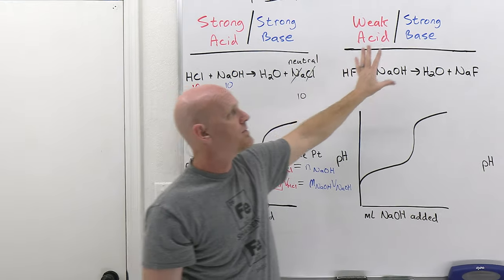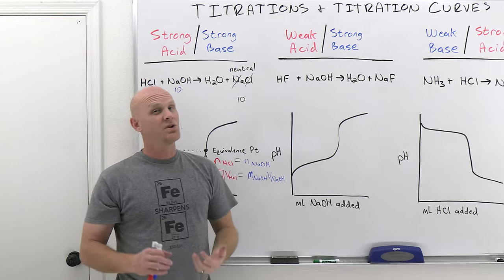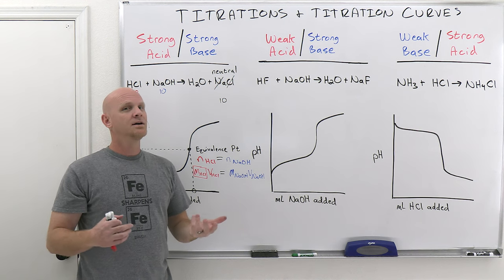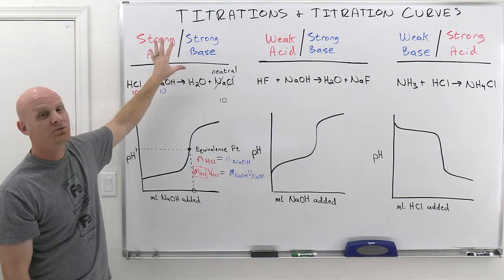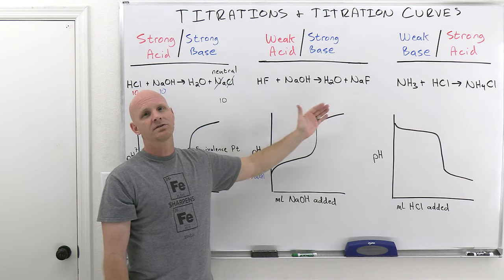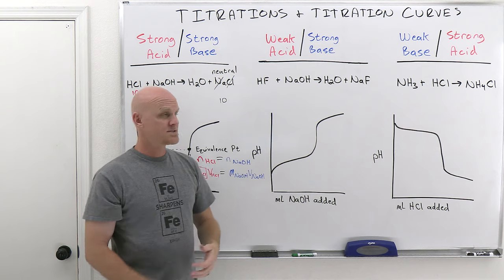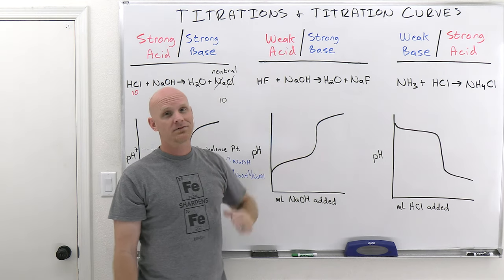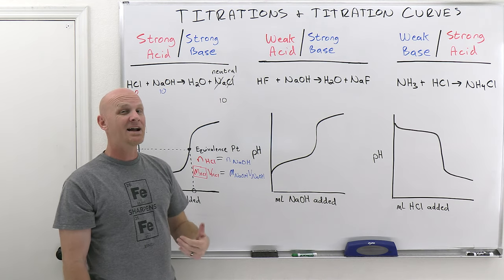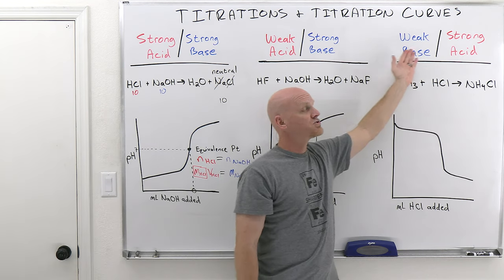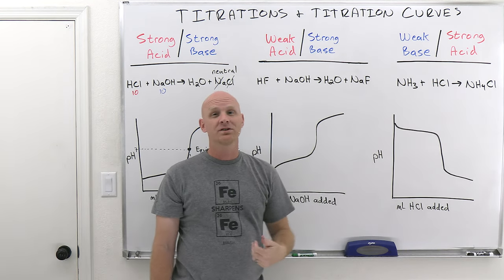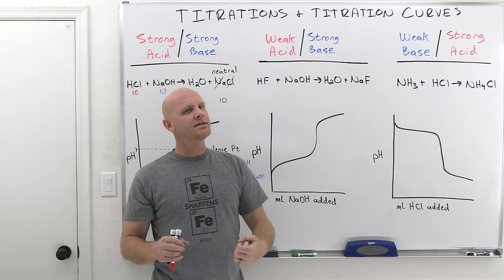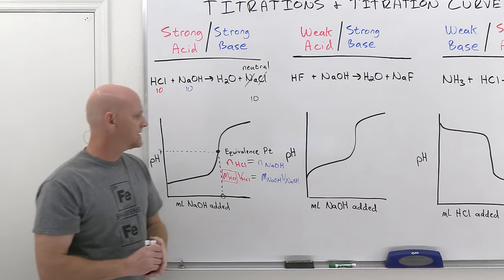When we look at weak acid/strong base or weak base/strong acid titrations, the pH will not be 7 at the equivalence point. You might think that if you've added equal amounts of acid and base the pH should be neutral, but that's only true if both are strong. My personal way of remembering this: whoever is strong wins at the equivalence point. With a weak acid/strong base, the pH is a little basic — maybe 7 to 10. With a weak base/strong acid, the pH is a little acidic — probably somewhere between 4 and 7.